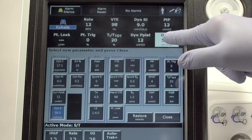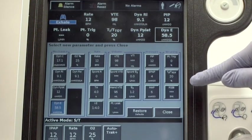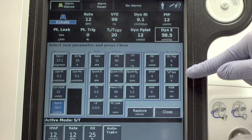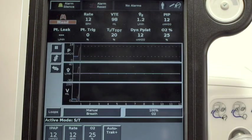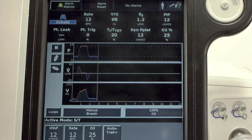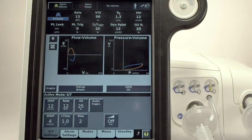We also see some useful weaning parameters like Rapid Shallow Breathing Index, RSBI, and TIT-TOTE. Moving down the screen to the graphics window, we see the waveforms for pressure, flow, and volume. Touching the Loops button switches this section of the screen to the flow volume and pressure volume loops.